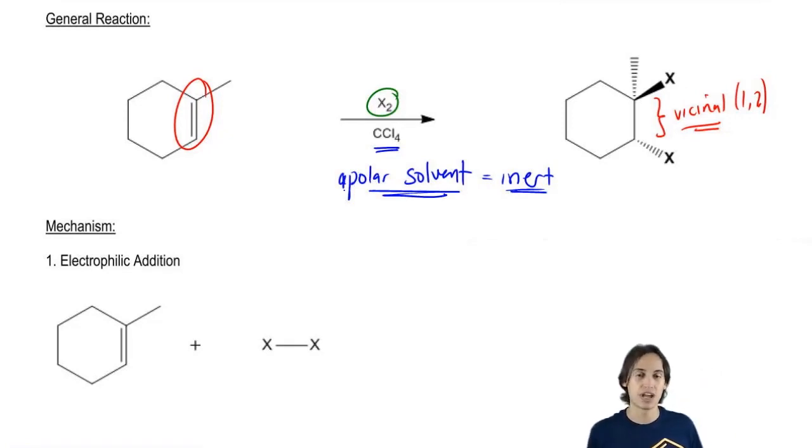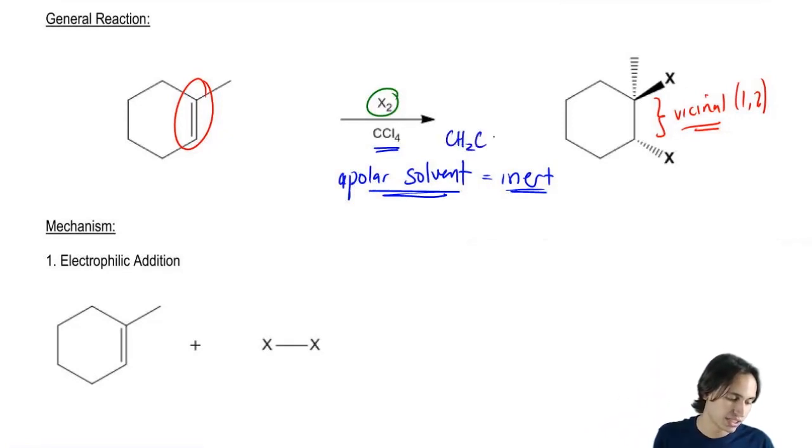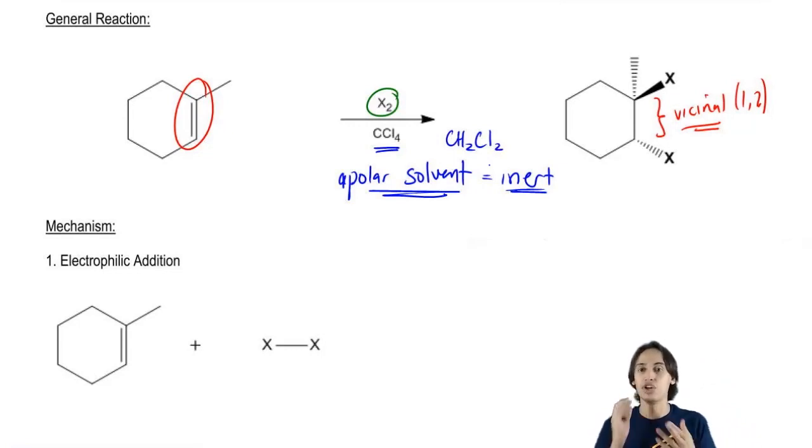But it's not going to do anything. Another common solvent that you might see is like CH2Cl2. That just means it's the same thing. It just means instead of having four chlorines, you have two chlorines and two H's. Regardless, these are just solvents that don't do anything.